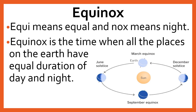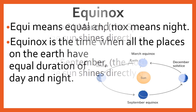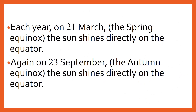Students, let's understand the meaning of equinox. Equi means equal and nox means night. Equinox is the time when all the places on the earth have equal duration of day and night. Each year, on 21 March — the spring equinox — the sun shines directly on the equator. Again, on 23 September — the autumn equinox — the sun shines directly on the equator.